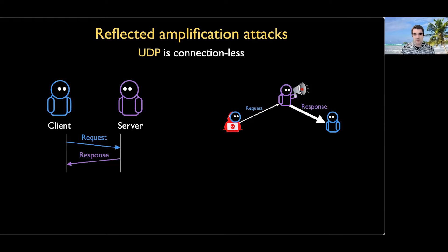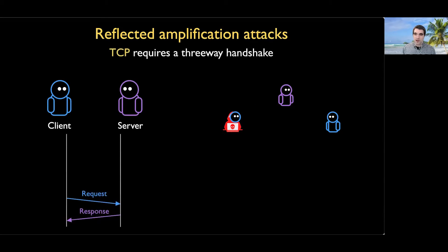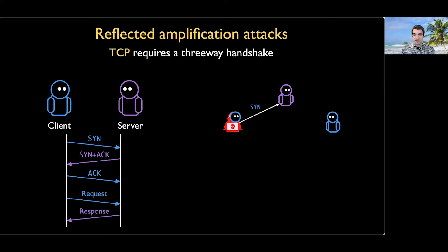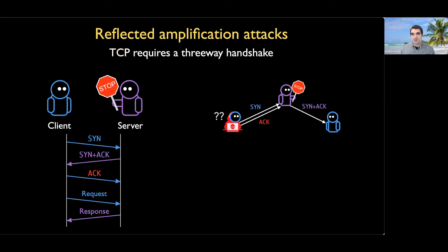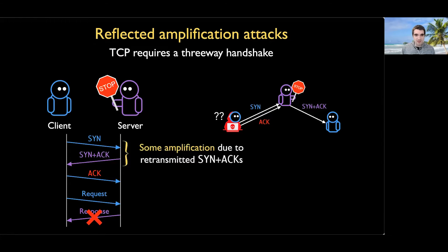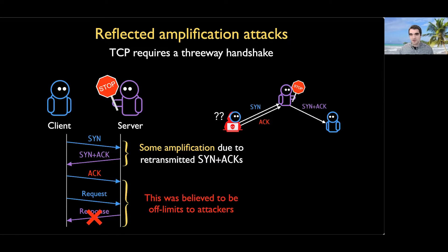TCP, on the other hand, has been spared from most amplification attacks because TCP requires a three-way handshake — an exchange of information between client and server used when making the real request. If an attacker tries to do a three-way handshake while pretending to be their victim, the server's response goes to the victim, so the attacker is missing the critical information needed to complete the handshake. Even if they try anyway, the information will be incorrect and the server will shut down the connection. Technically there is some small amplification offered by retransmitted SYNs during this initial exchange, and this is how TCP has been used in the past. But the actual request and response has always been believed to be off-limits to attackers — until today.